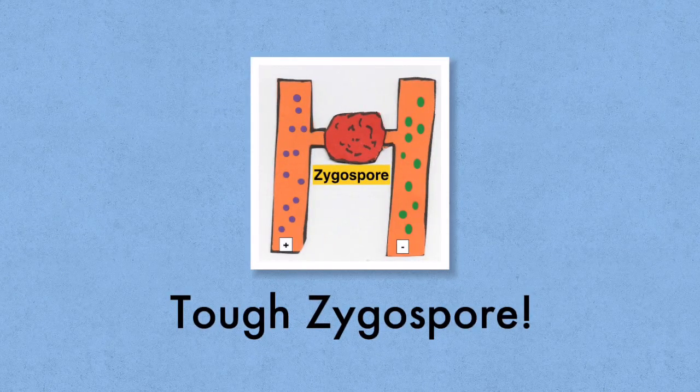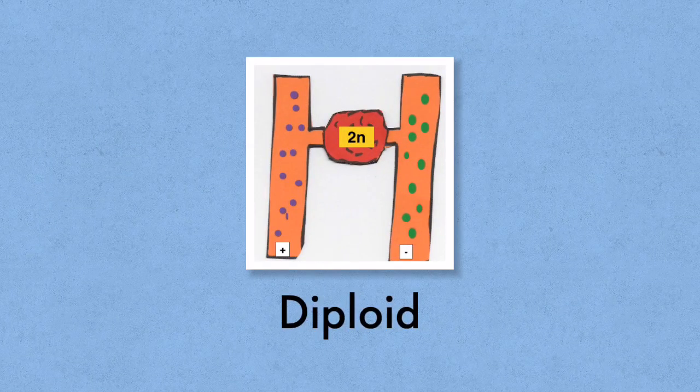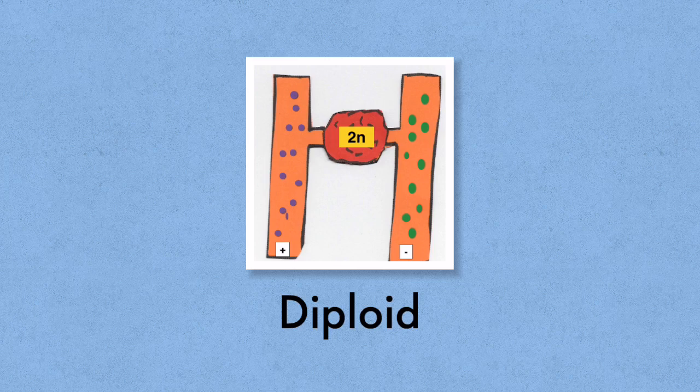These diploid zygote nuclei get surrounded by a zygospore. Don't forget to include those suspensors in your labeled diagram. So at the end of this process we have a diploid zygospore.